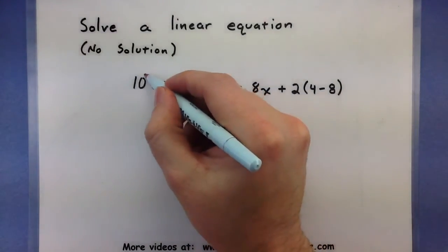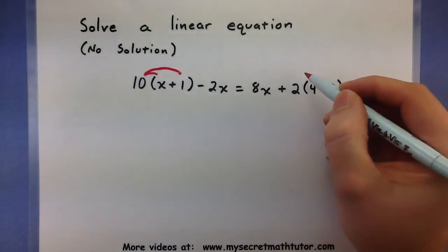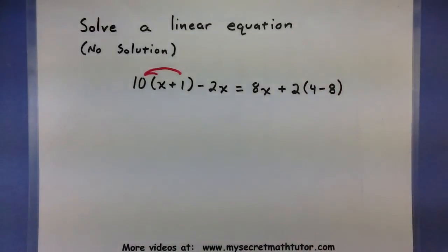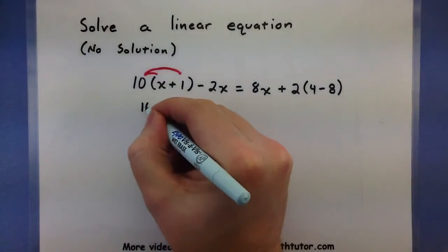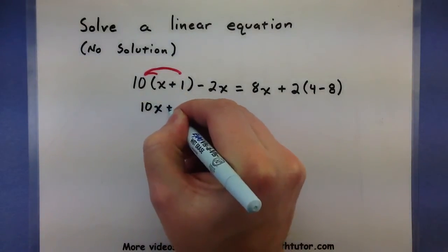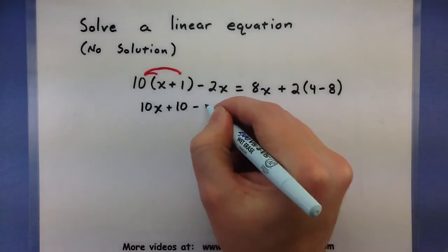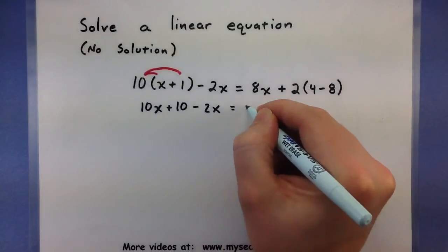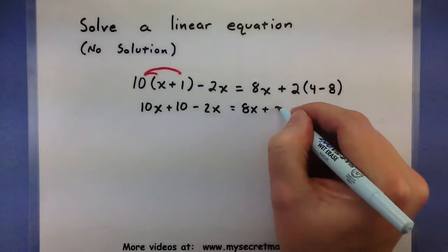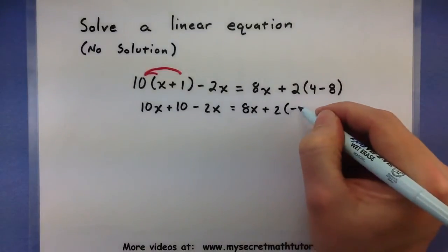I can see that maybe I can distribute this 10 and maybe combine the 4 and the negative 8 on the end. Let's see how this helps me out. So 10x plus 10 minus 2x equals 8x plus 2 times negative 4.